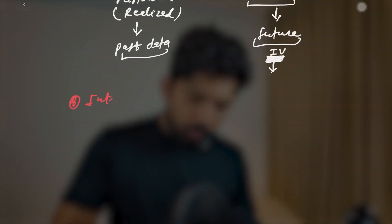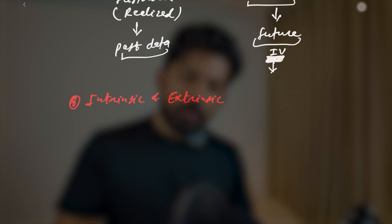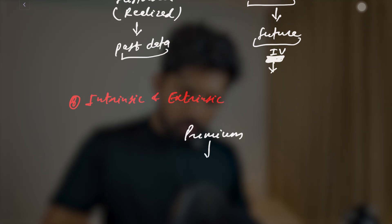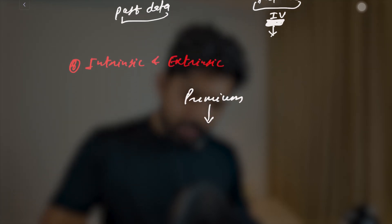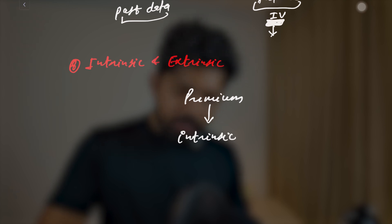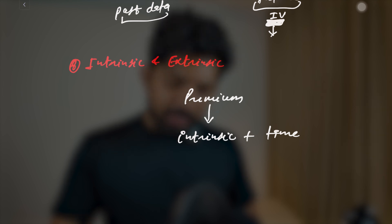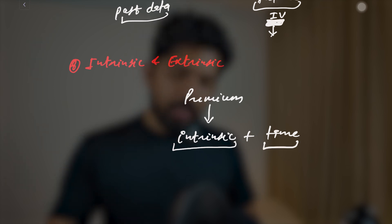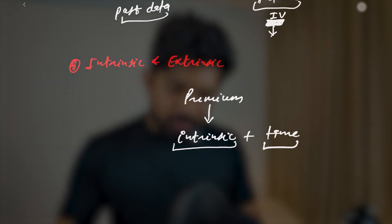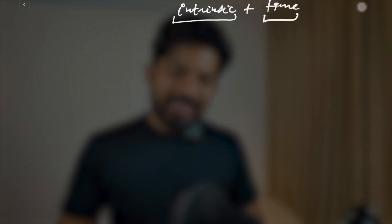Next we have intrinsic and extrinsic value, which we've already covered thoroughly. Any option price or premium has two components: intrinsic value and extrinsic value, also known as time value. If the option is ITM (in the money), it has intrinsic value; for OTM options there is no intrinsic value and only time value remains. Please refer to the previous session for a thorough explanation.